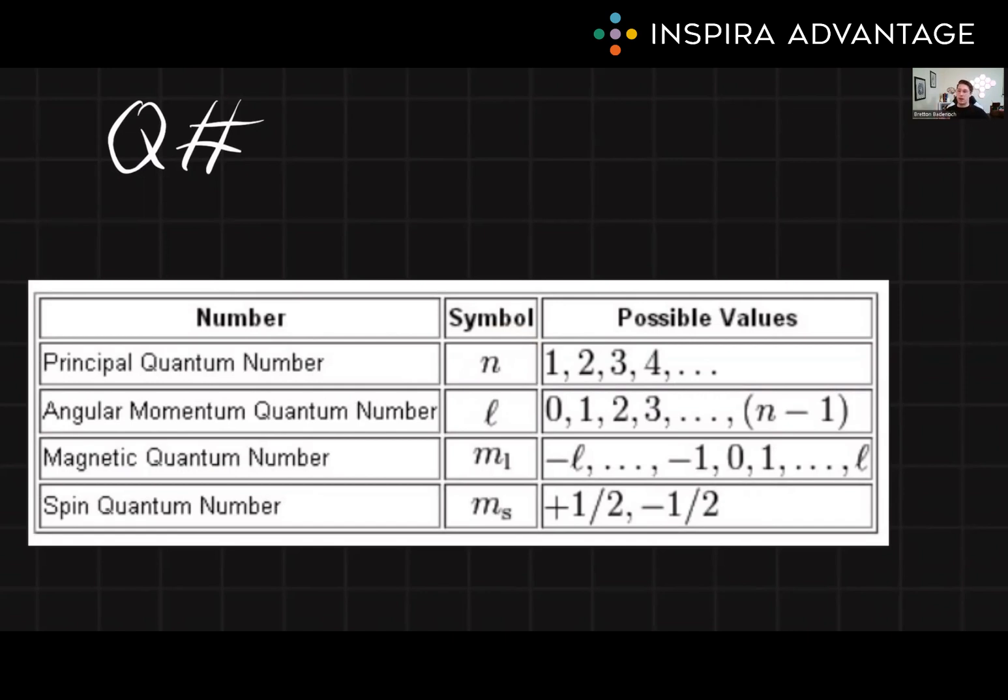As n is increasing, the electron's energy and distance from the nucleus is increasing. So an n of one would look like a small sphere, and an n of four would look a lot bigger.